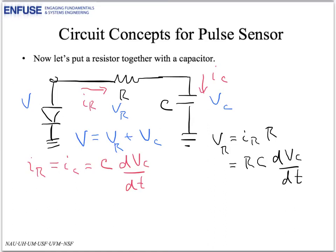So now let's think about what happens if the source voltage has a high frequency component, then it's changing quickly with time, which means that the time derivative of V sub C will be large. This makes V sub R large. And from this expression, if V sub R is large, then the voltage across the capacitor, V sub C, must be small.